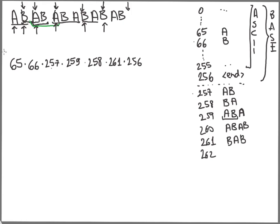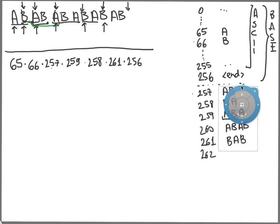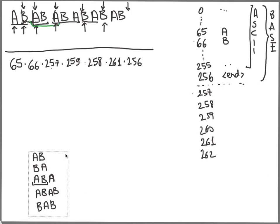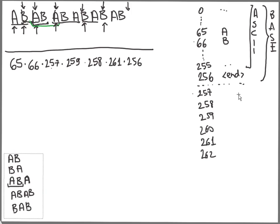Now let's assume we are on the receiving side and just received this sequence. We are starting from a clean slate — we don't know the dynamic mapping. We start from an empty dynamic dictionary. We will apply the same algorithm and see what comes out. Of course we won't be able to do a look-ahead, so we will always be one step behind, but that will not be a problem.